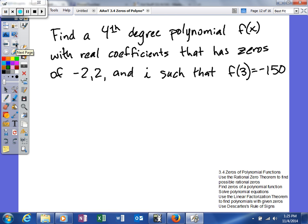So it says find a fourth degree polynomial f(x) with real coefficients that has zeros of negative two, two, and i, such that f(3) equals 150. So what we're going to do first is we're going to take our zeros and write them in linear factored form.